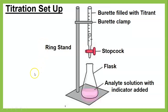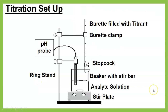In AP chem, we do titrations differently. We use pH probes so we don't need an indicator. The probe graphs the data on a computer, and we look at the shape of the graph. The problem with indicators is that by the time you see the color change, you've already gone a little too far. With a pH probe, stir plate, and stir bar, we get much more accurate results.